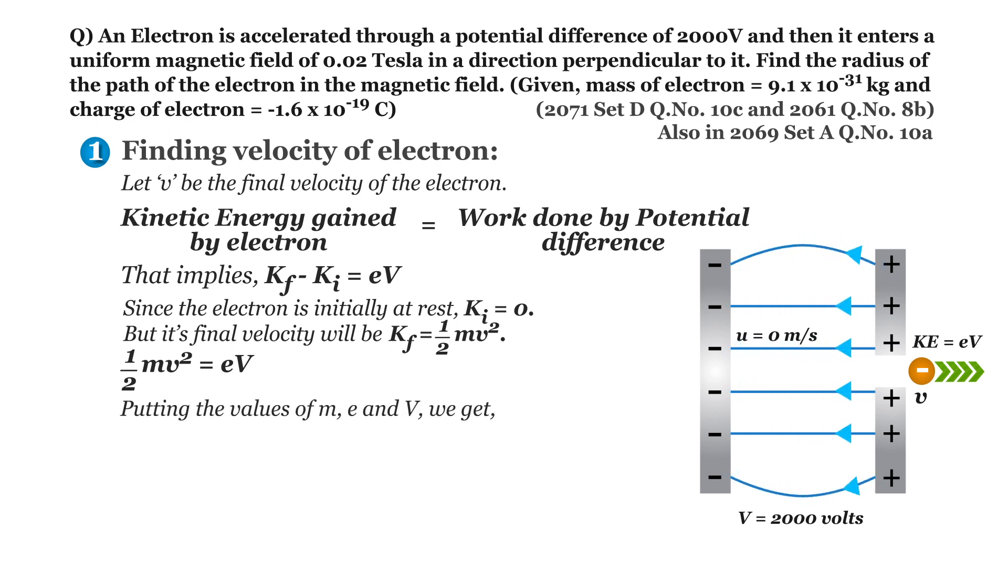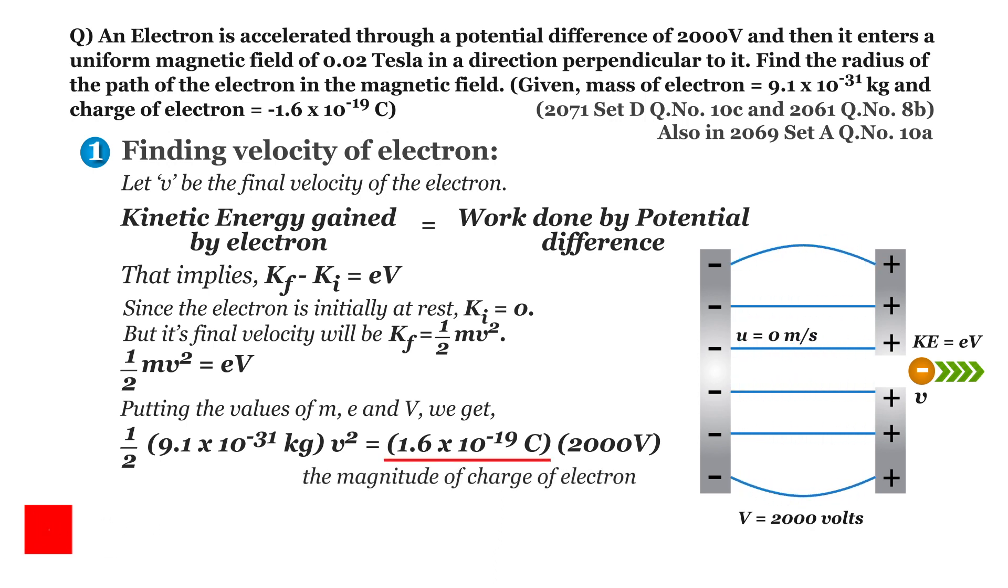Putting the value of m, E and capital V that is potential difference, we get half times 9.1 into 10 to the power minus 31 kg times v square equals 1.6 into 10 to the power minus 19 coulomb times 2000 volt. Here we have taken the magnitude of charge of electron. Solving this equation, we get v equals 2.65 into 10 to the power 7 meters per second.